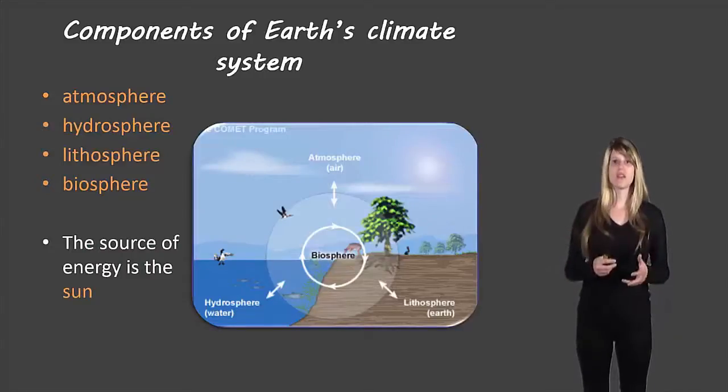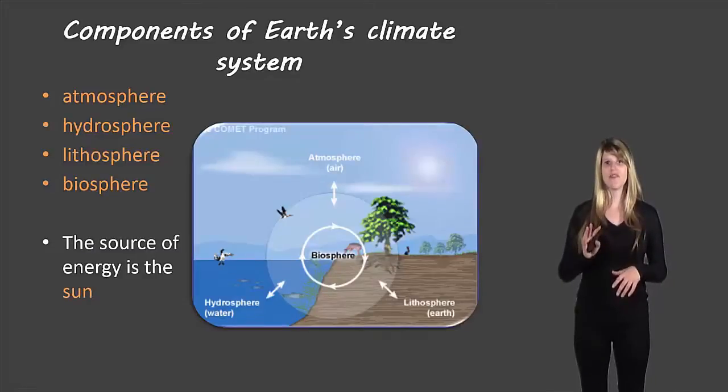Now let's get into the components of the Earth's climate system. There are four of them. The first one is atmosphere and that's the air.